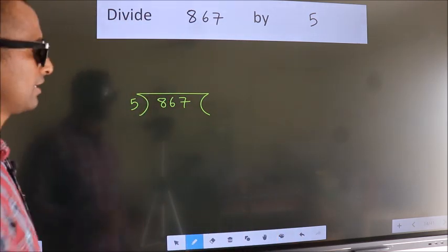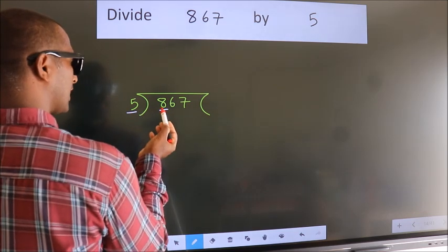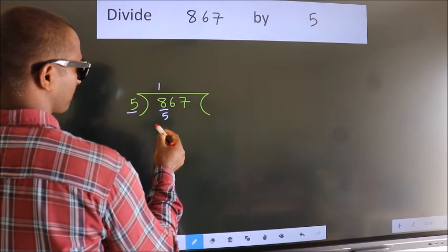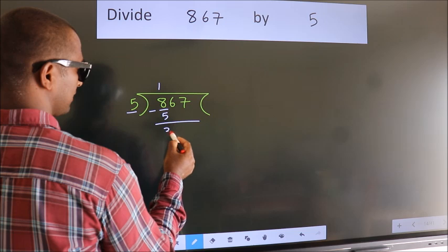Next. Here we have 8, here 5. A number close to 8 in 5 table is 5 once 5. Now we should subtract. We get 3.